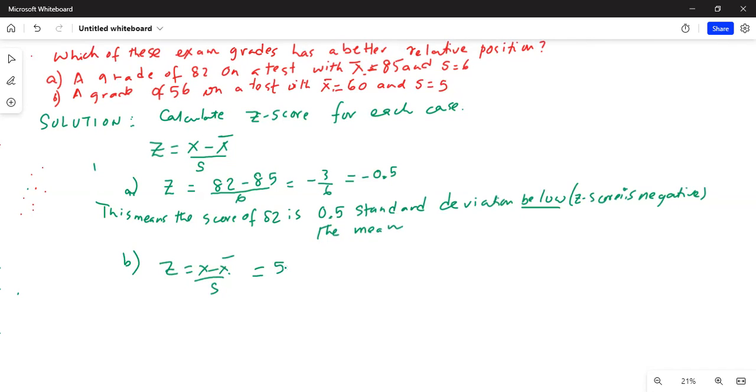z-score is 56 on a test with mean of 60 and standard deviation of 5.